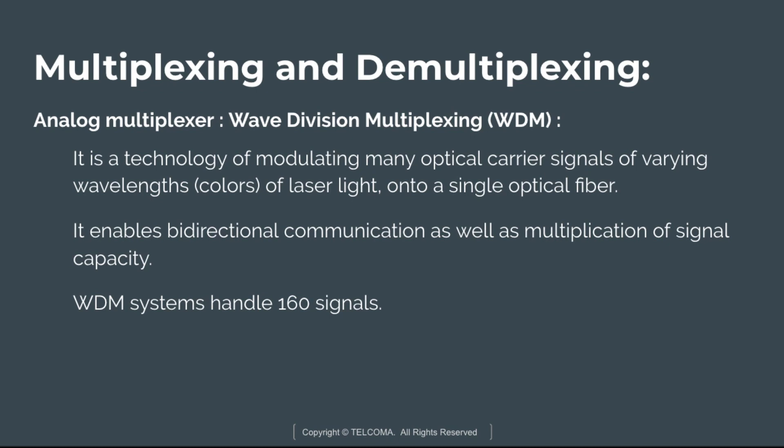Wave Division Multiplexing (WDM) is a technology of modulating many optical carrier signals of varying wavelengths — different colors of laser light — onto a single optical fiber. It enables bi-directional communication as well as multiplication of signal capacity. WDM systems handle 160 signals at a time, ranging from 10 Gbps on a single fiber optic pair to more than 1.6 Tbps.